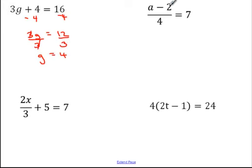Second example: a minus 2 divided by 4 equals 7. The last thing done here was dividing by 4, so the first thing I'll do now is multiply both sides by 4.